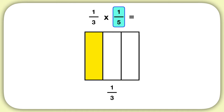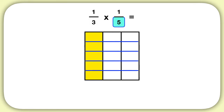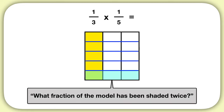Because we're multiplying by fifths, we'll break this model into five equal sections. And we're only multiplying by one of these, so we'll only shade in one of these fifths. Now how can I tell from this model what my answer is? I ask myself, what fraction of the model has been shaded twice?